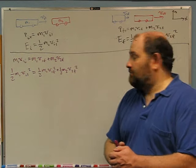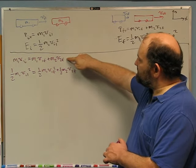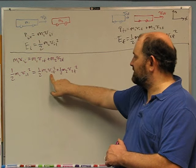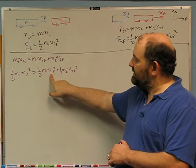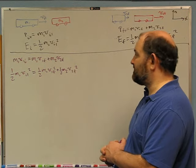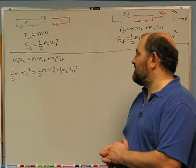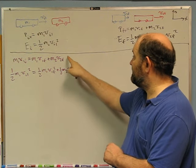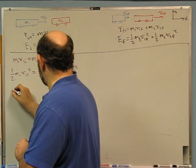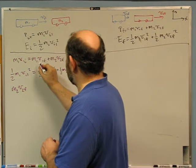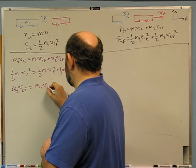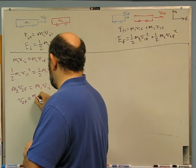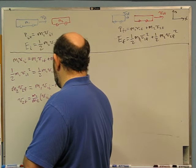There are two ways to approach the algebra and I'm going to do both. I'll start with the simpler equation, solve it for one of the unknowns, and substitute into the second equation. I'm going to find v1f first, so I need to eliminate v2f. I'll start by solving the momentum equation for v2f: m2*v2f equals m1*v1i minus m1*v1f, so v2f equals (m1/m2)*(v1i minus v1f).